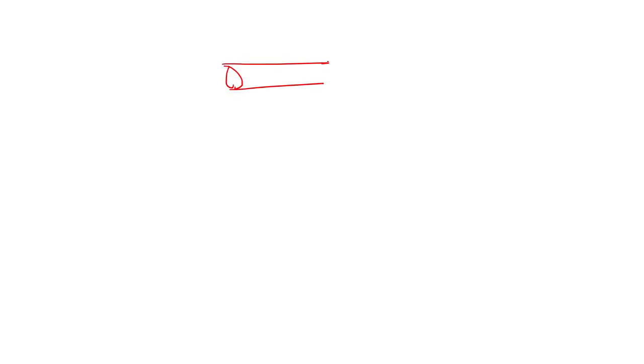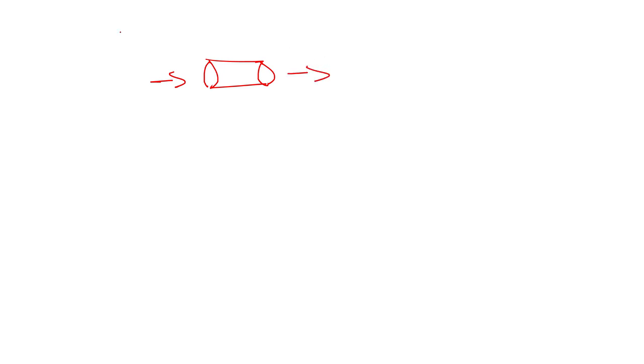Today in this video I'm going to talk about channel direction. We can have channels which can only receive data and we can also have channels which can only send data. For example, we have a channel and using this channel we send some data, and at one end we receive some data — this is a sender and this is a receiver. We can also specify that a channel will only receive or only send data.